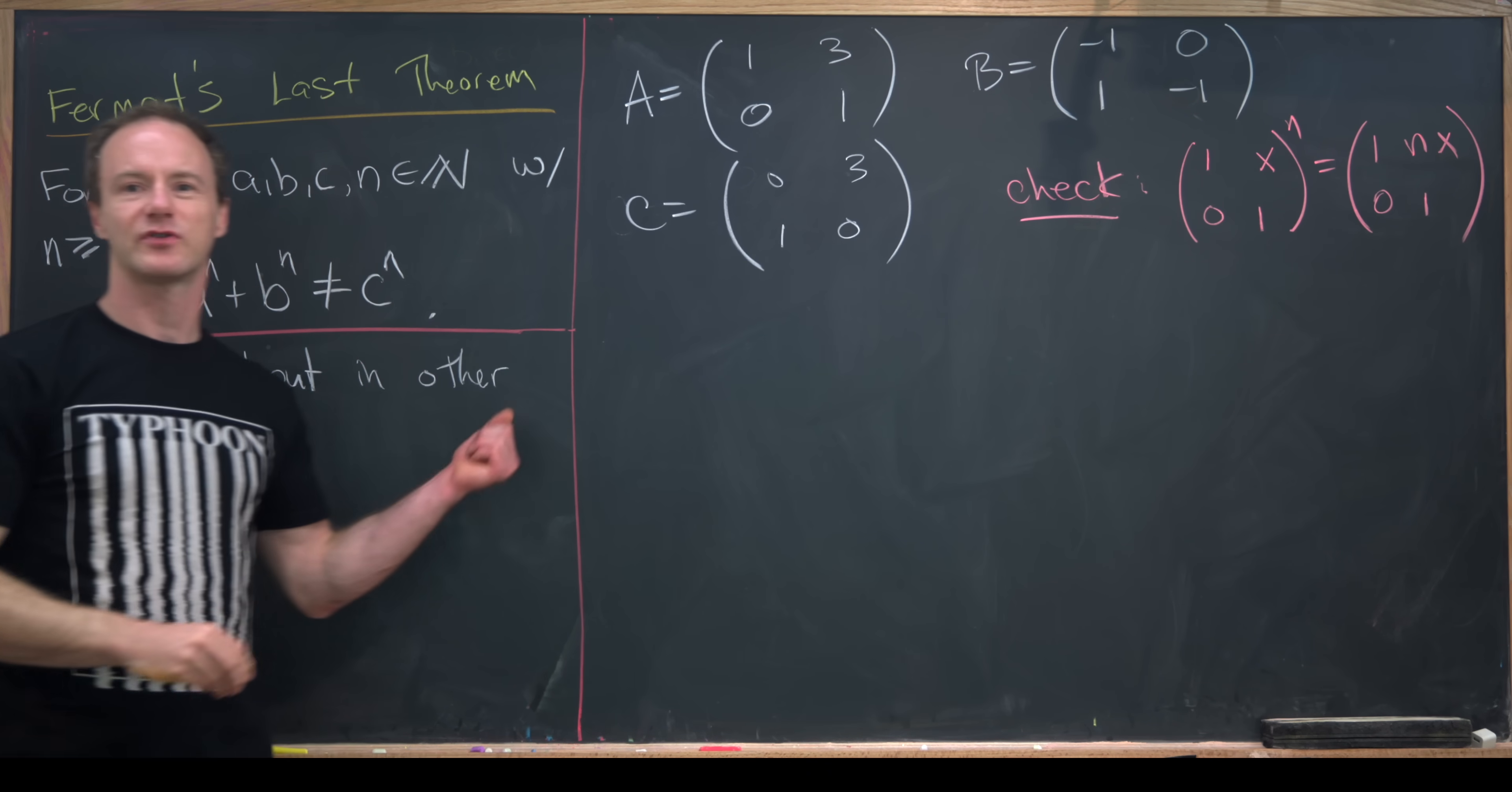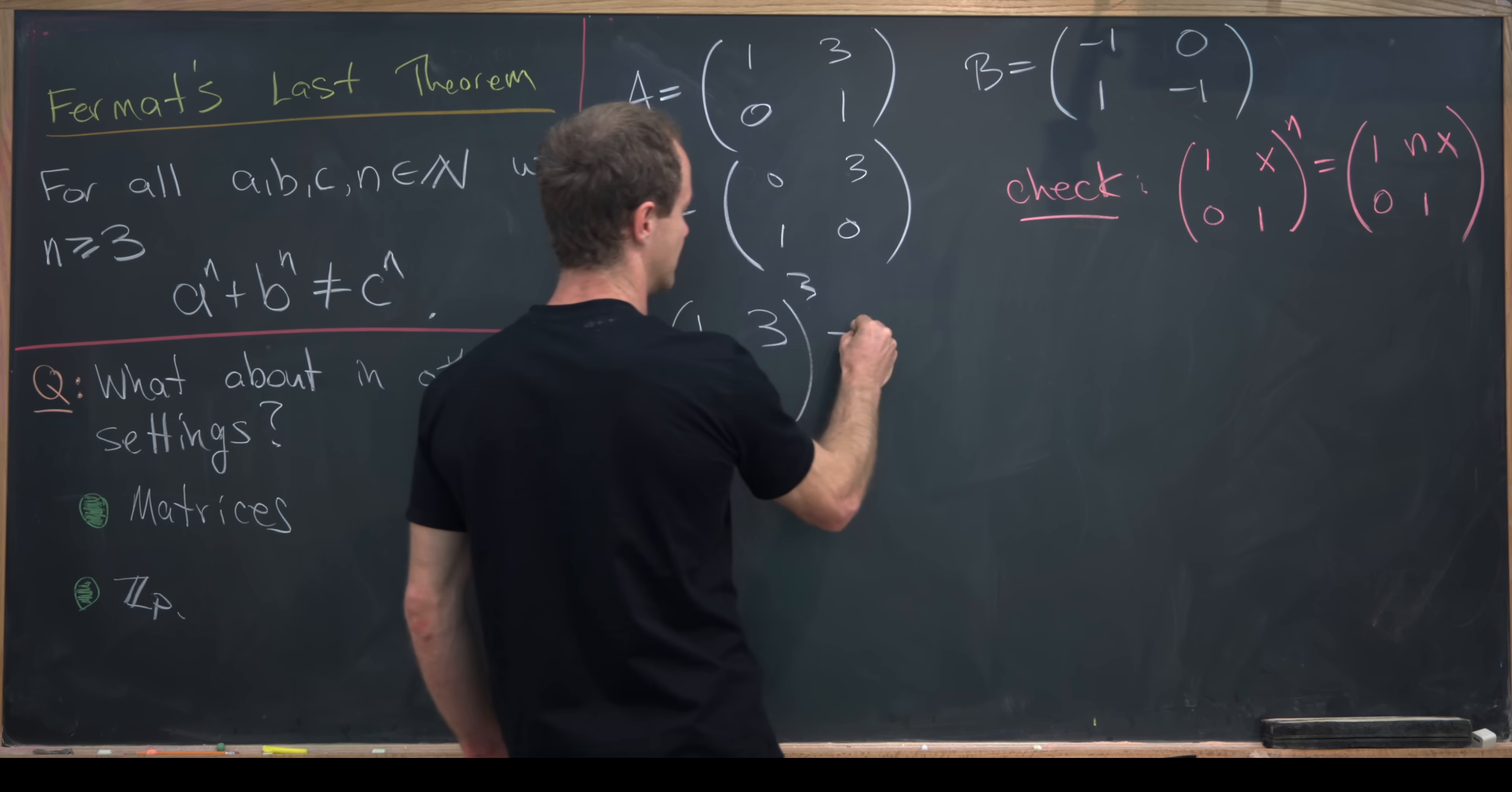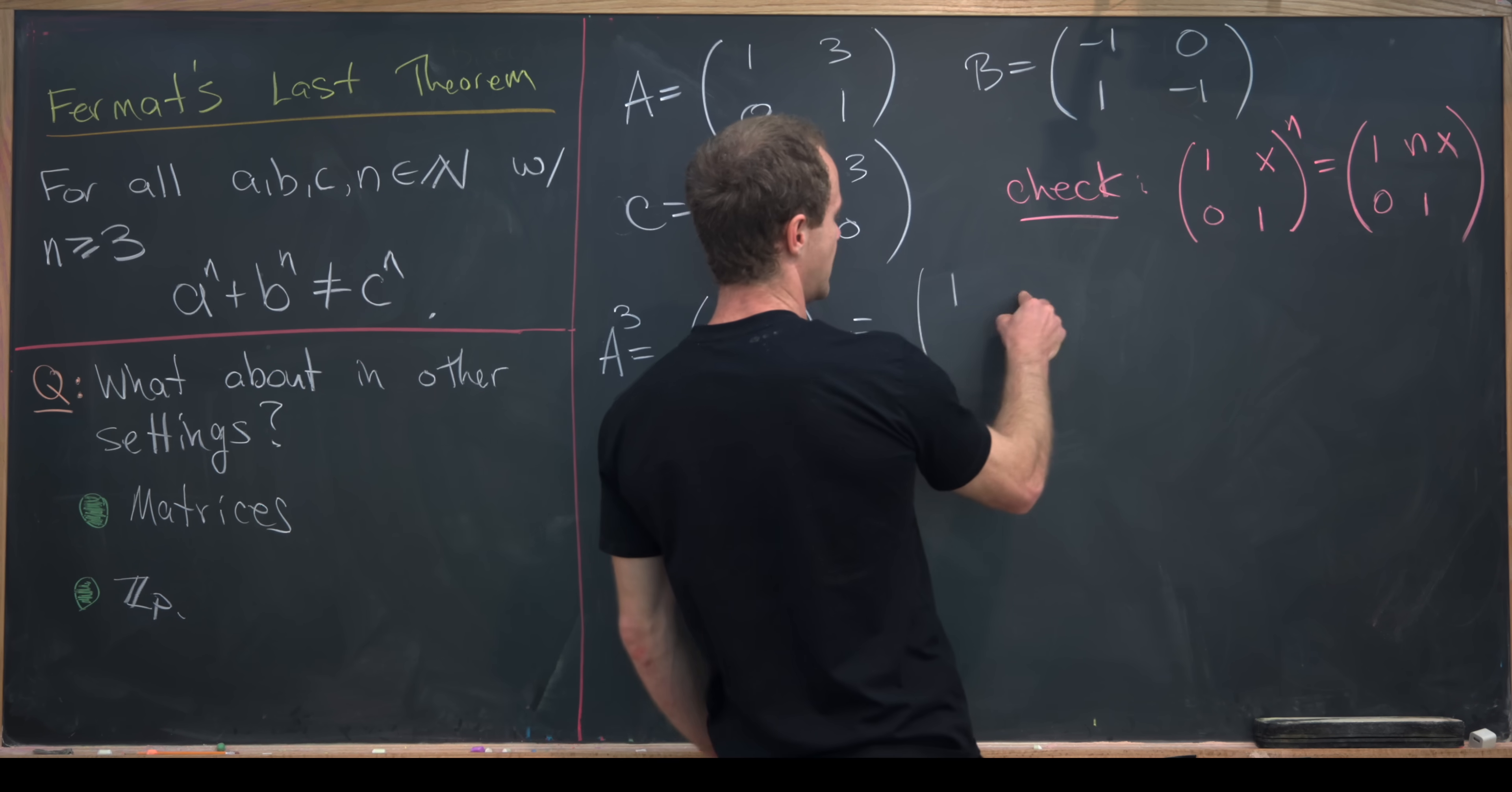You can prove a formula like that pretty easily with induction. But that tells us that A cubed, which in our case is 1, 3, 0, 1 cubed, using that rule, we'll get 1, 3 times 3 which is 9, 0, 1.